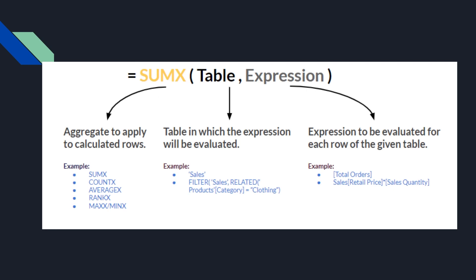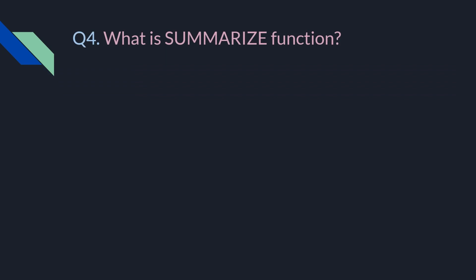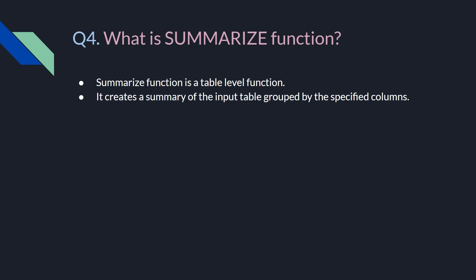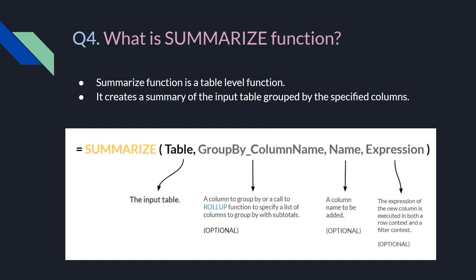It is not necessary to learn these syntaxes by heart — you should be very clear on the logic behind them. The fourth question is: what is the SUMMARIZE function? The SUMMARIZE function is a table-level function that creates a summary of the input table grouped by specified columns. You give a table name and it gives you a summary of that table. The syntax takes the table, the group-by column name, and optionally a name and expression — all inputs except the table are optional.